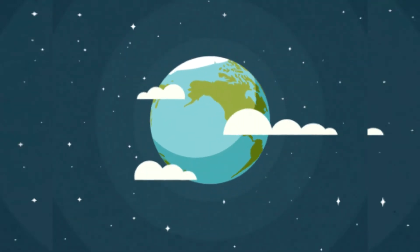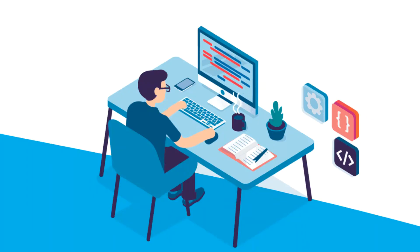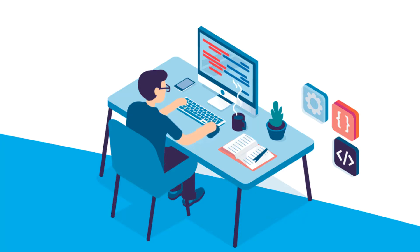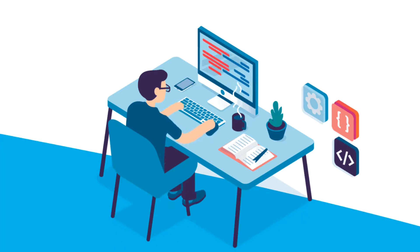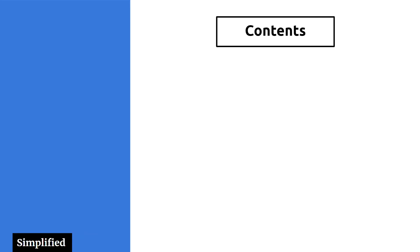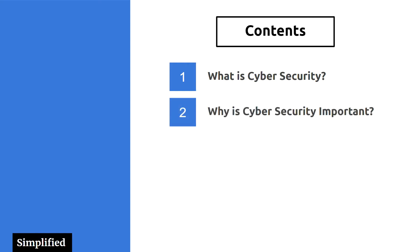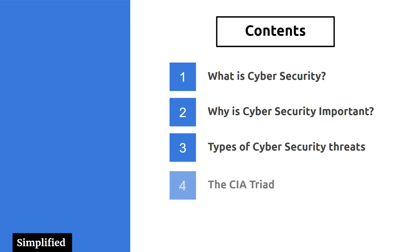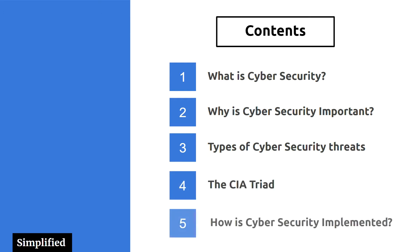In today's world, cyber security is very important because of security threats and cyber attacks. For data protection, many companies develop software that protects the data. Cyber security is important because not only does it help to secure information, but it also protects our systems from virus attacks. In this video, we will be learning about: what is cyber security, why is cyber security important, types of cyber security threats, the CIA triad, and how cyber security is implemented.